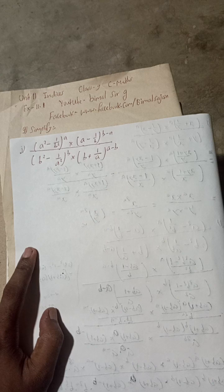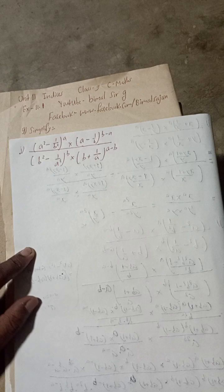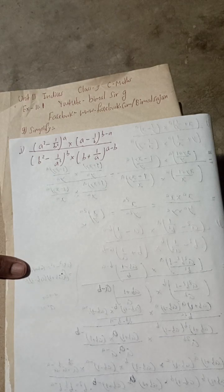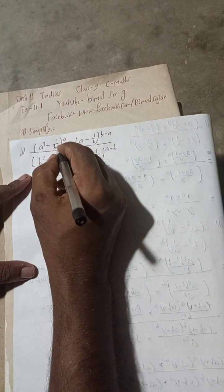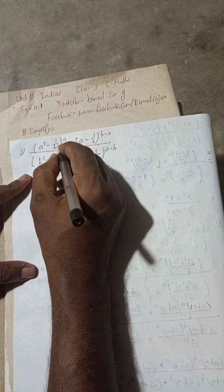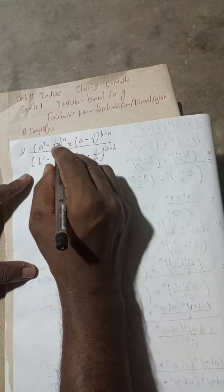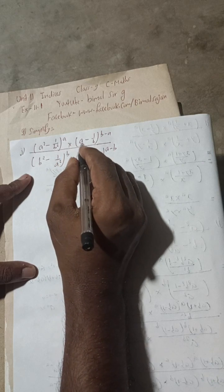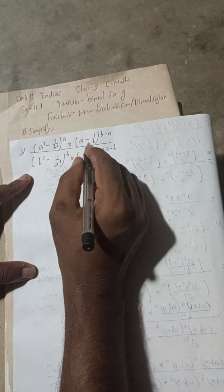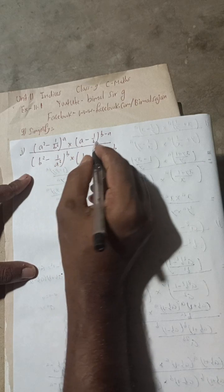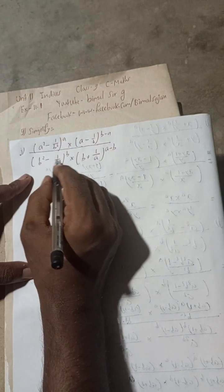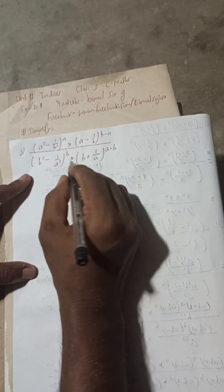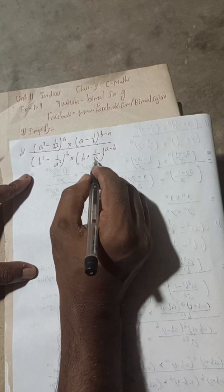If you are new to my channel and have already subscribed, thank you. Let's begin this solution. Here is: (a² − 1/b²) to the power a, whole power a, into (a − (a−1/b)) whole power b, minus (a/b² − 1/a²) whole power b into (b+1).